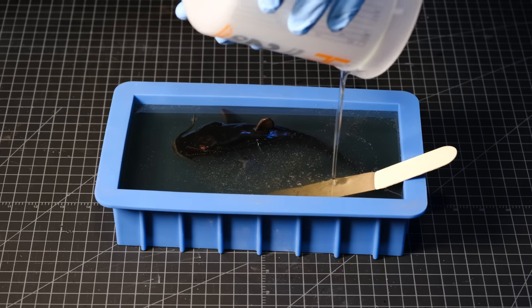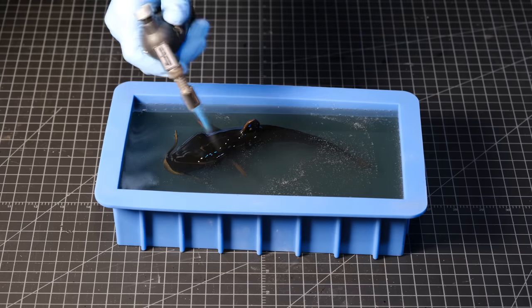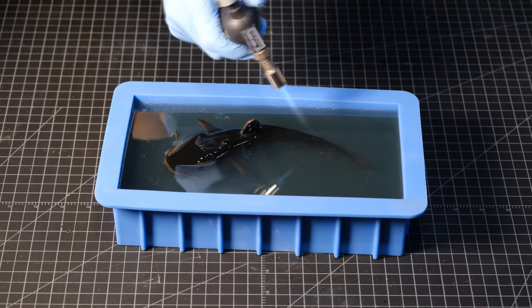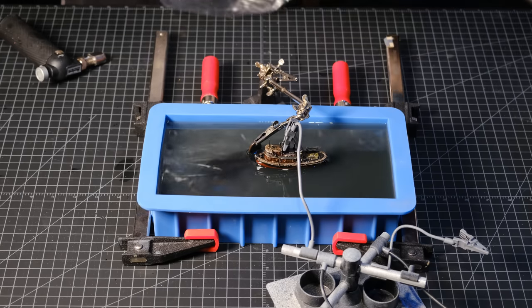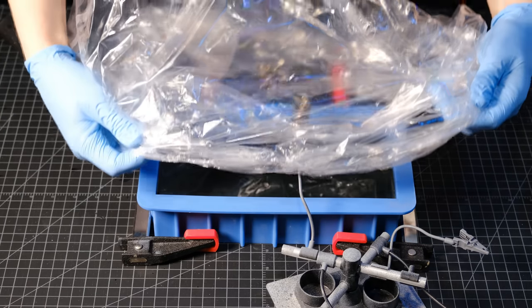After I had poured the resin, I popped those little surface bubbles with the torch, and I held the fish and the boat in place with some little arms. I then covered it, and I left it to cure for 72 hours.